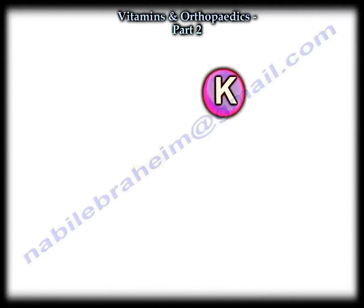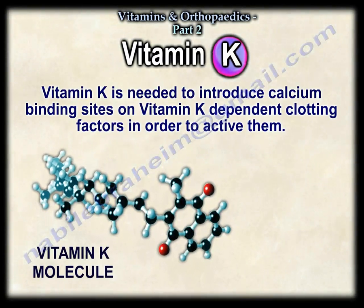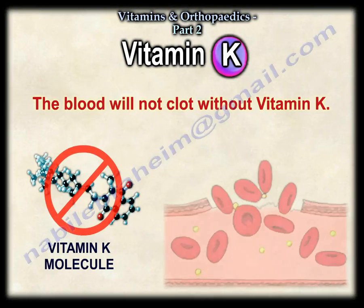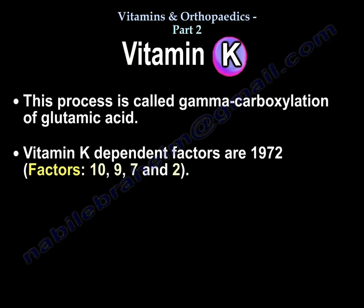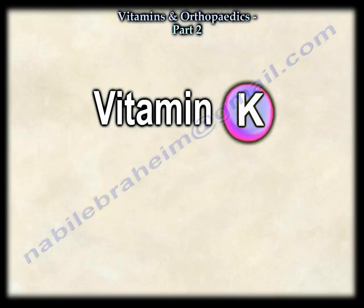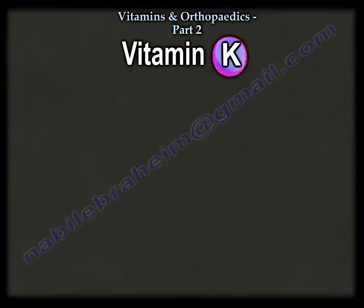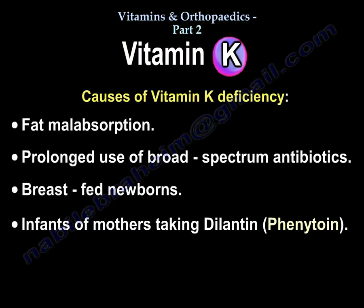Vitamin K is needed to introduce calcium binding sites on vitamin K dependent clotting factors in order to activate them. Without vitamin K, the blood will not clot. This process of introducing calcium binding sites on vitamin K dependent clotting factors is called gamma carboxylation of glutamic acid. The vitamin K dependent factors are factors 10, 9, 7, and 2, which could be remembered as the year 1972. Vitamin K is found in green leafy vegetables. Causes of vitamin K deficiency include fat malabsorption, prolonged use of broad spectrum antibiotics, breastfed newborns, and infants of mothers taking Dilantin.